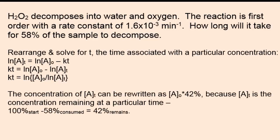Because we're not given a particular concentration, we can rewrite the concentration at the particular time, AT, as the initial concentration times 42 percent. Because if we start off with a hundred percent, we're consuming 58 percent, so 42 percent remains. So recall that AT is the concentration at a particular time. We can take advantage of substitution and substitute A0 times 42 percent into the equation.